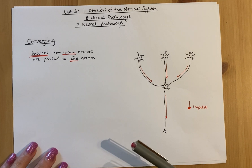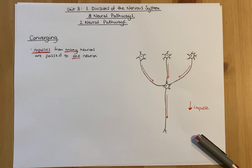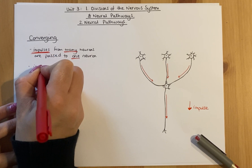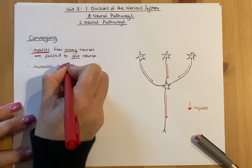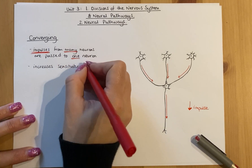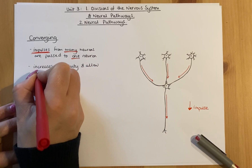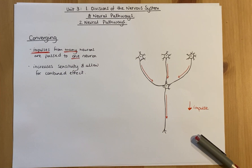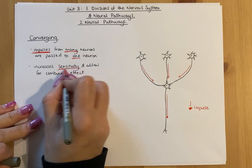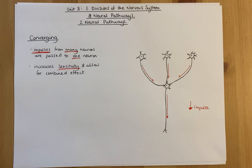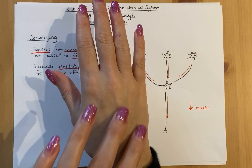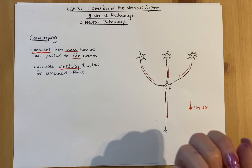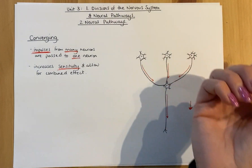You might be wondering what the point of that is — why is it important to have converging pathways, with impulses going from many neurons into one? The reason is it increases sensitivity and allows for a combined effect. Think about the back and the palm of your hand. If you run your fingers over the back of your hand, it's not super sensitive. But if you flip your hand over and do the same thing, you can feel that much more. The reason for more sensitivity is there are more neurons there feeding into one neuron that fires up your arm.